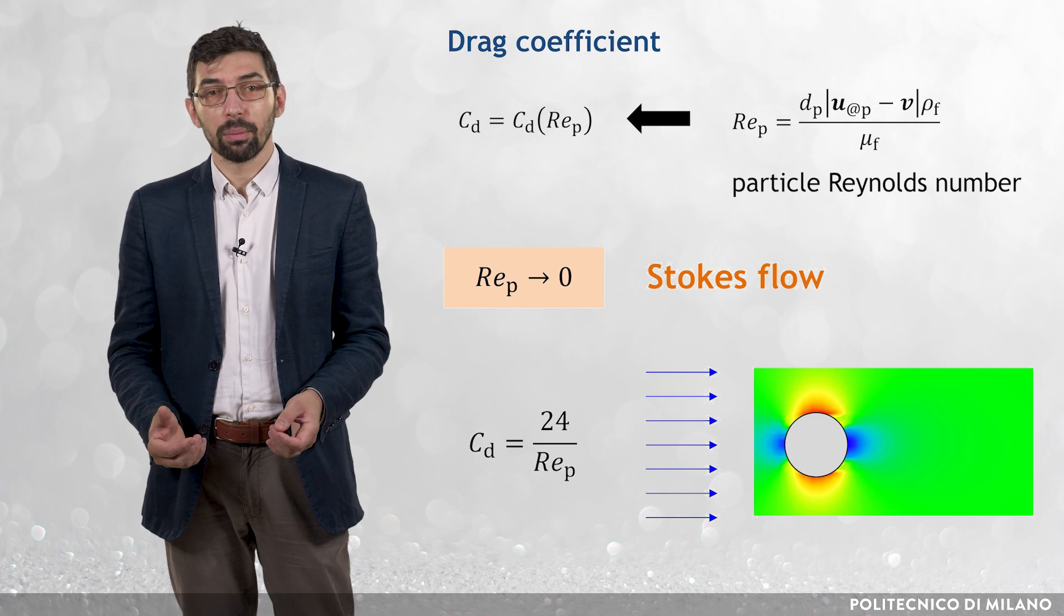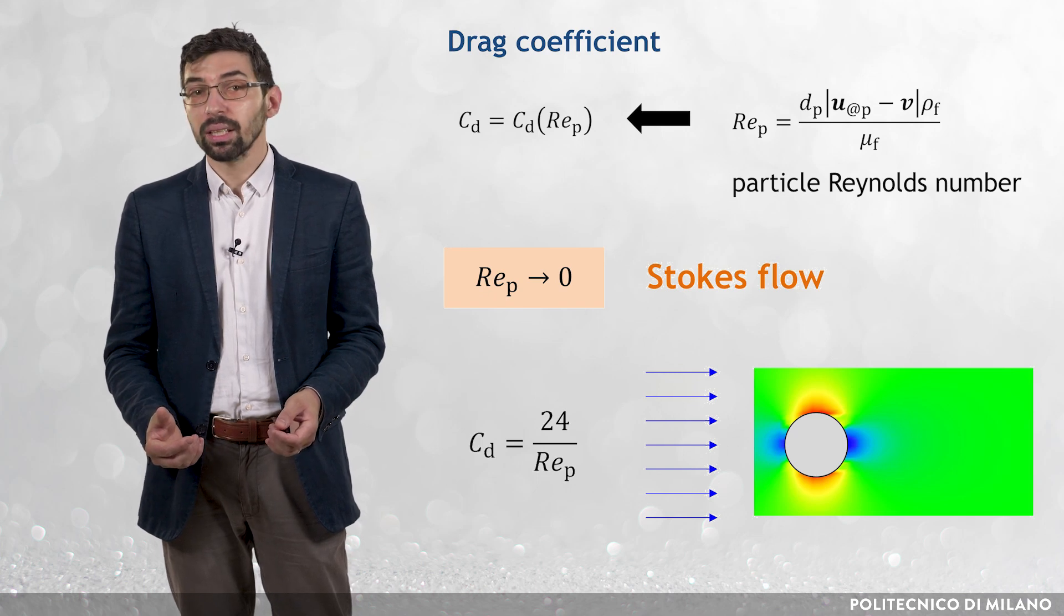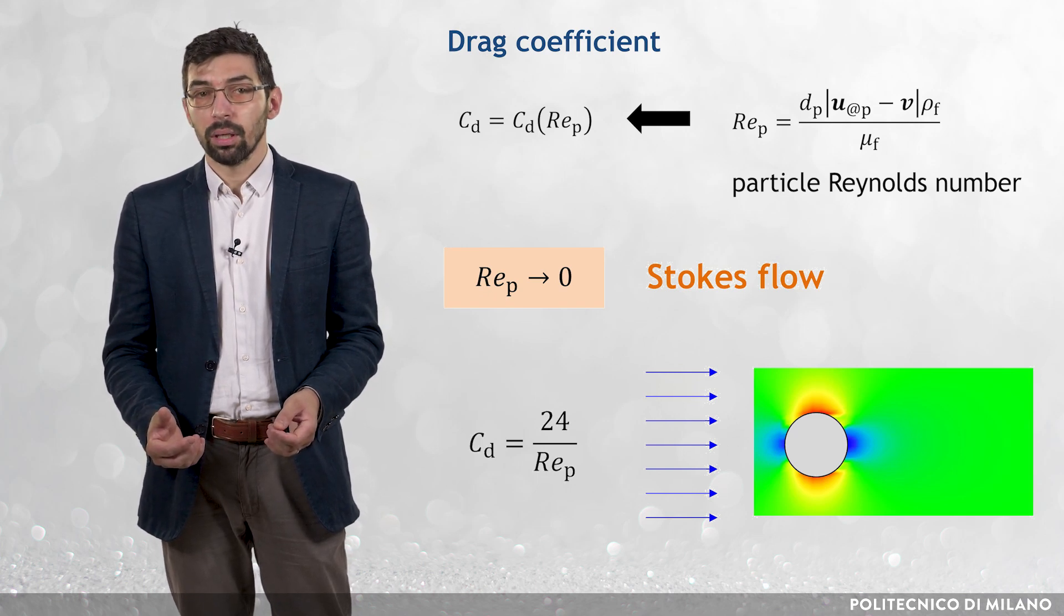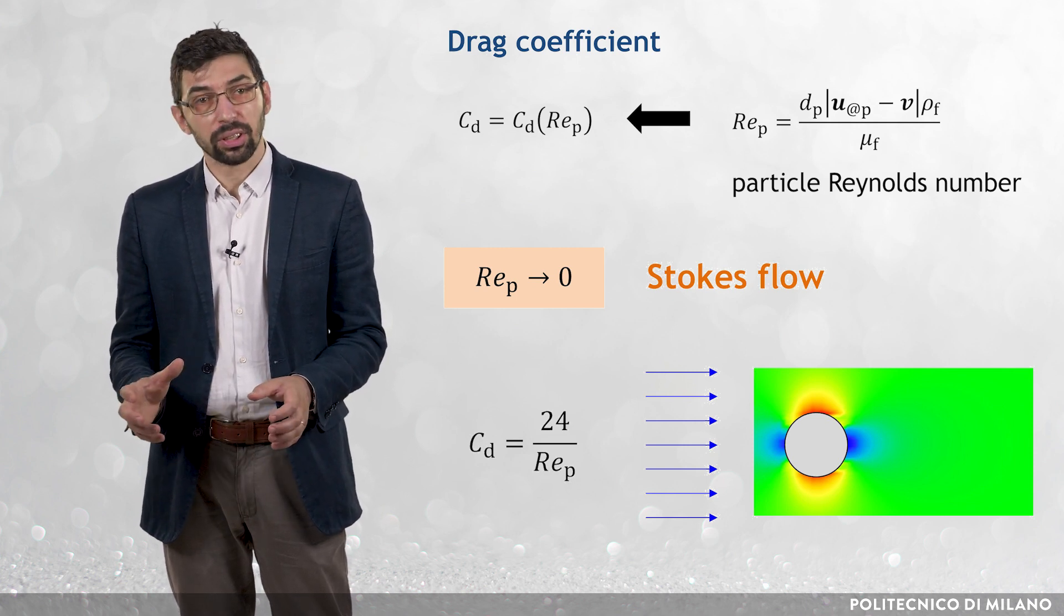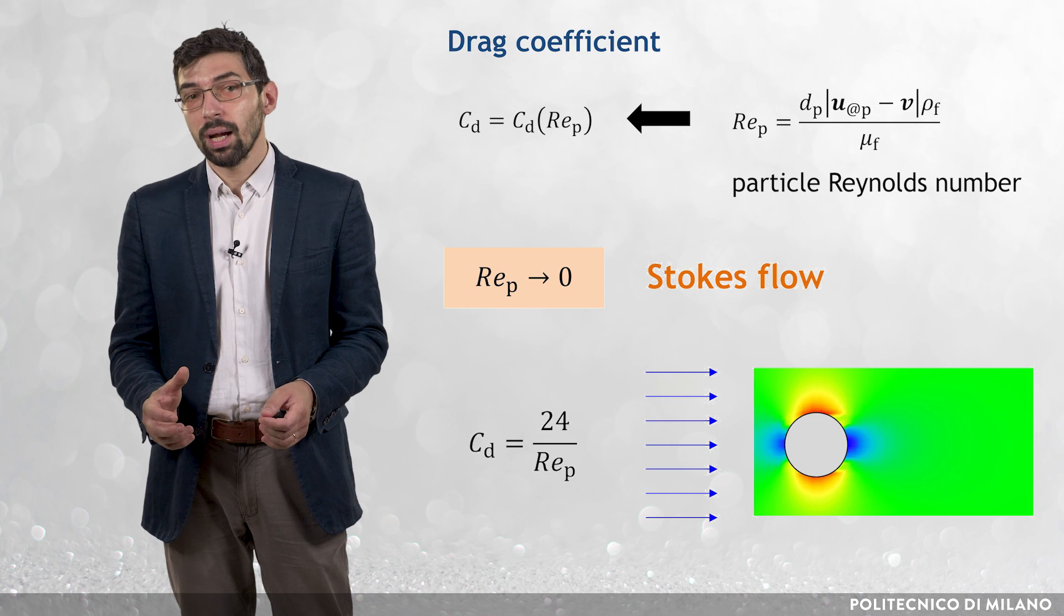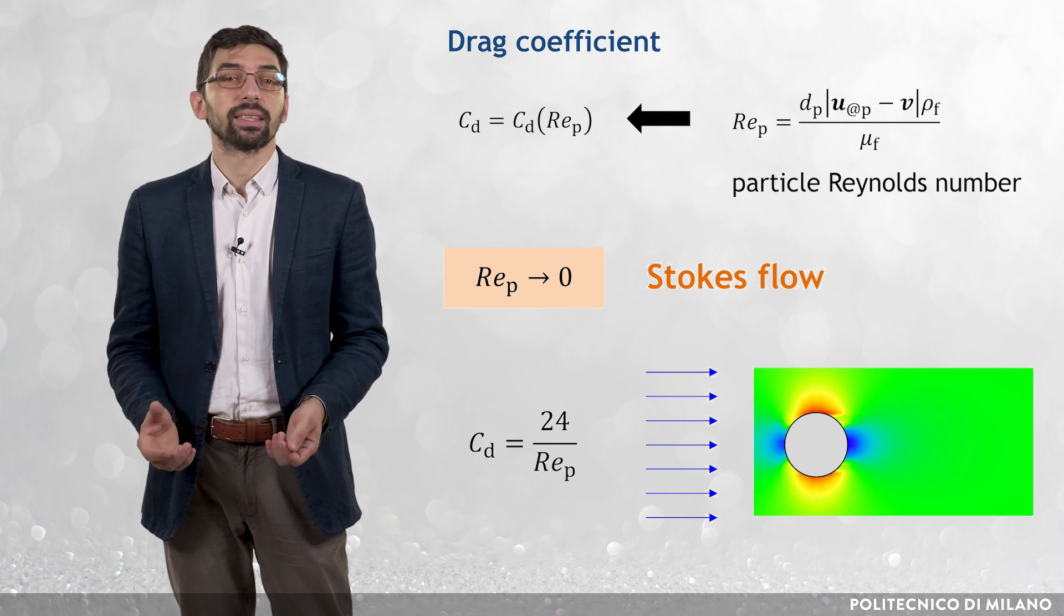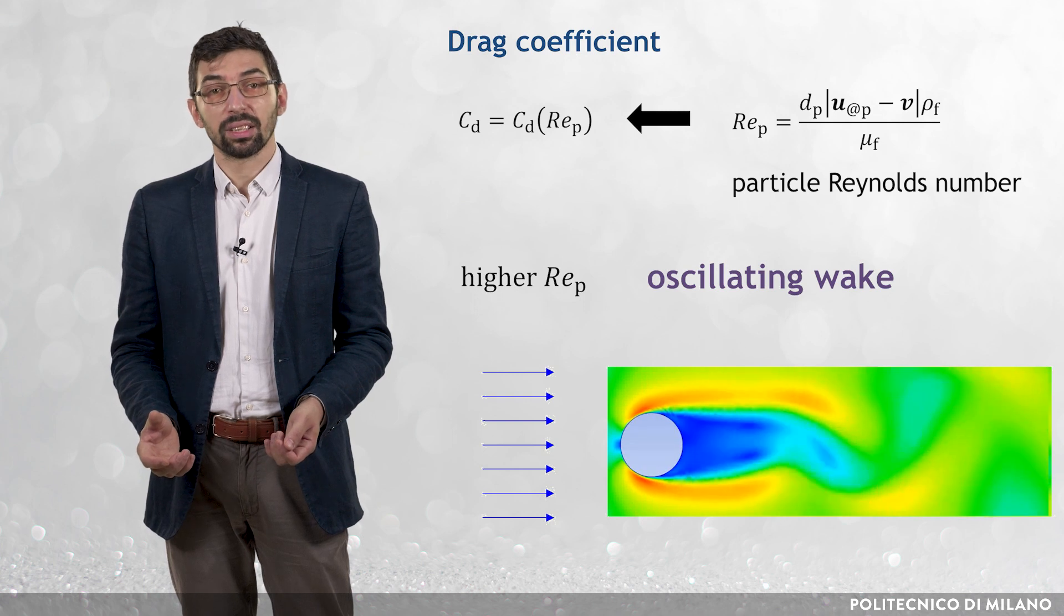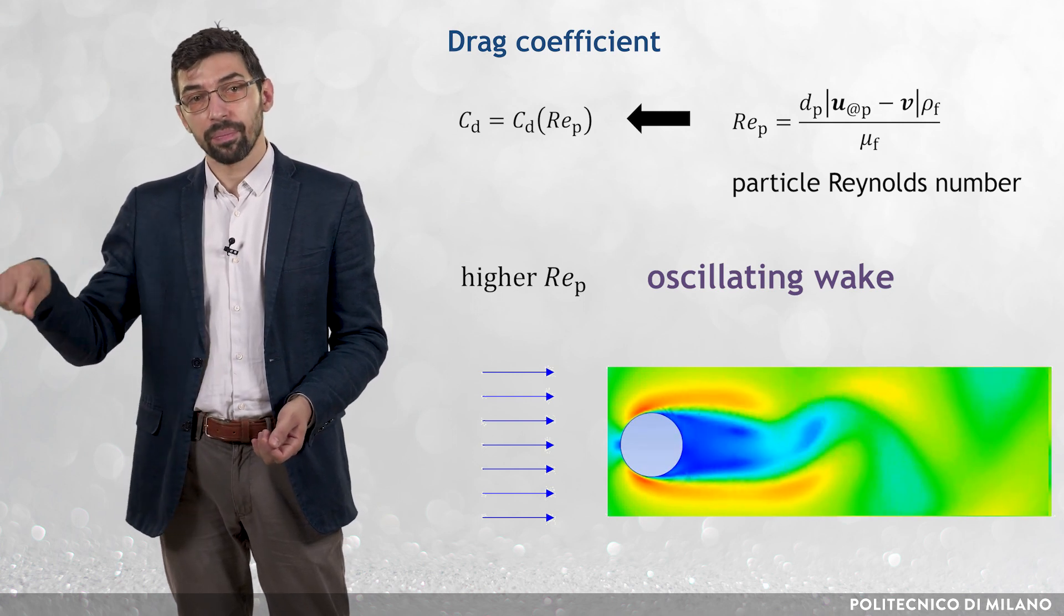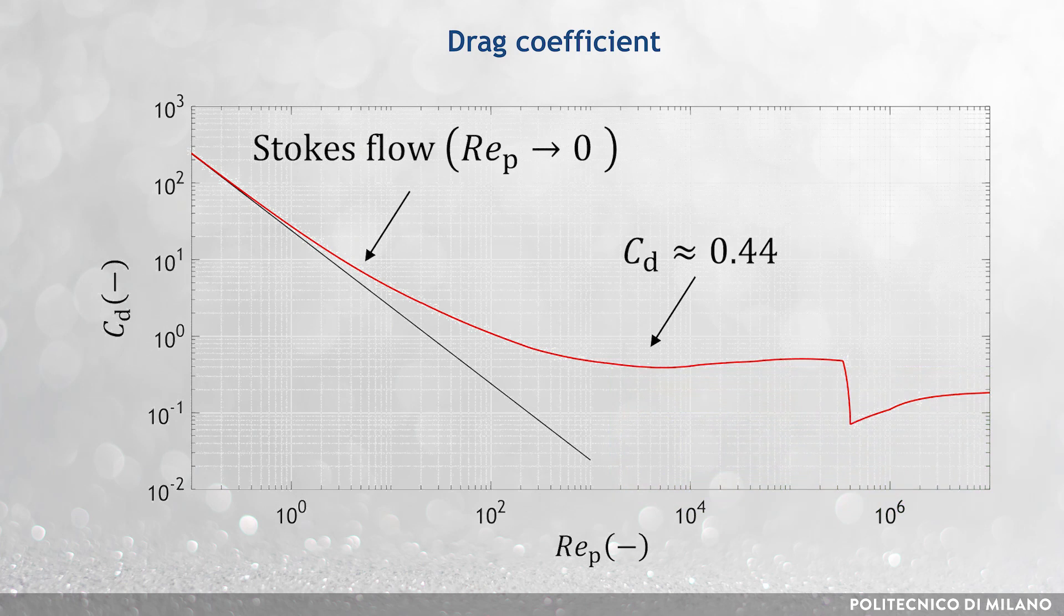However, complex phenomena take place at higher particle Reynolds number. Without entering into the details, vortical structures create behind the particle, and if the particle Reynolds number is sufficiently high, they result in the presence of an oscillating wake.